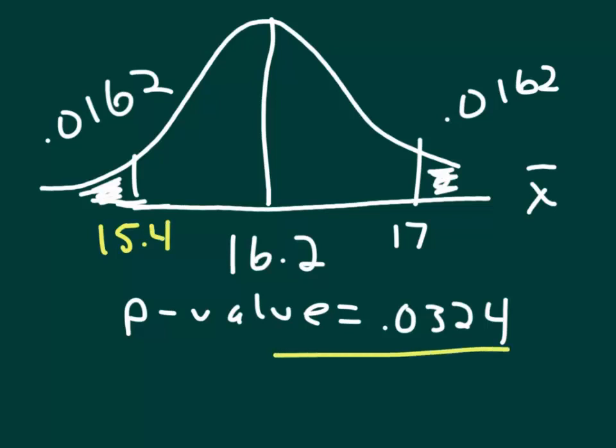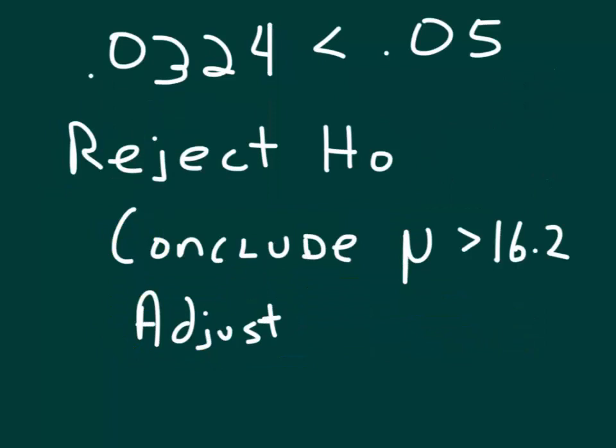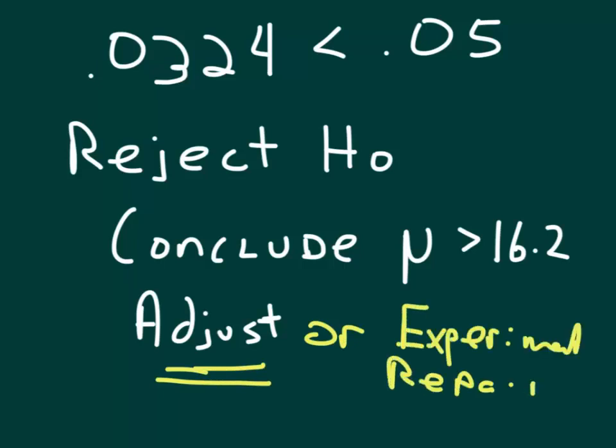So we have our p-value of 0.0324, that's less than 0.05, so we will reject H0, conclude that the population mean is greater than 16.2, and that some adjustment or experimentation or repair is needed for this soda machine.